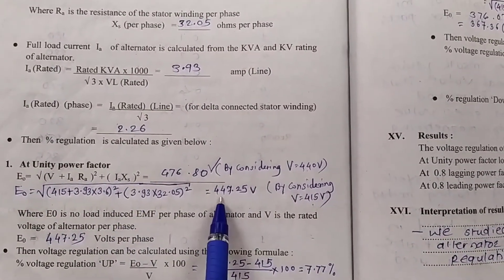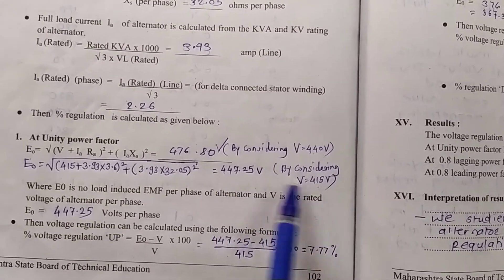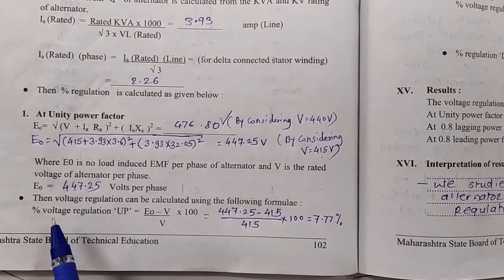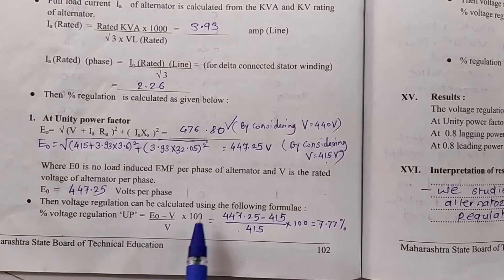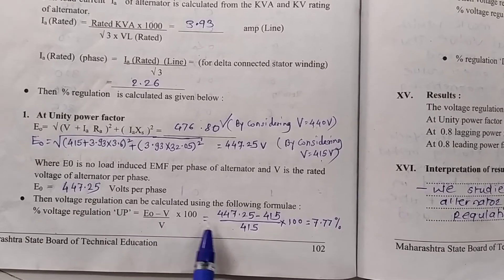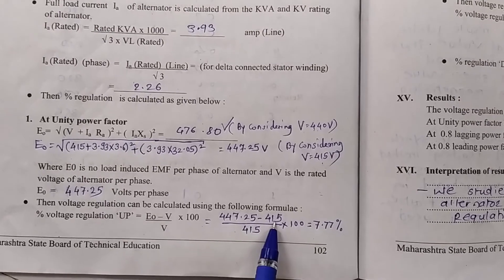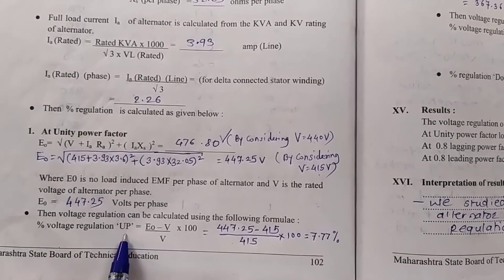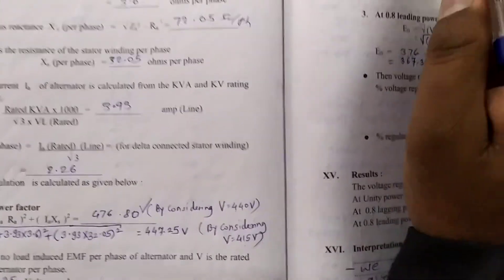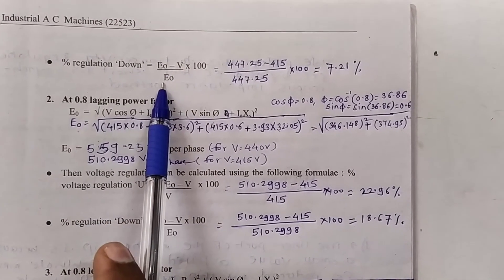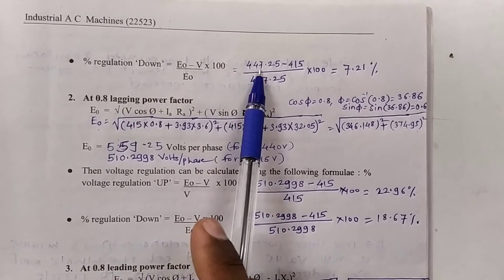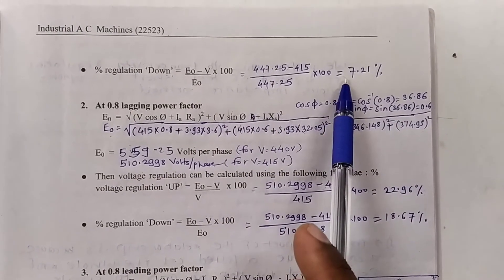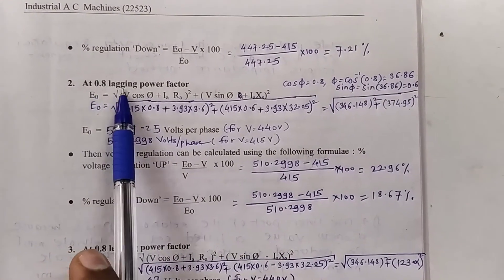Simplifying with V = 415V, Ia = 3.93A, Ra = 3.6 ohms, Xs = 32.05 ohms per phase: E0 = 447.25 volts. Regulation up = (E0 − V) / V × 100 = (447.25 − 415) / 415 × 100 = 7.77%. Regulation down = (E0 − V) / E0 = (447.25 − 415) / 447.25 = 7.21%.